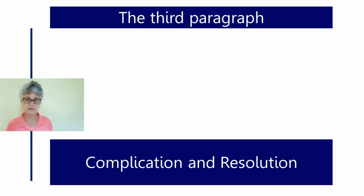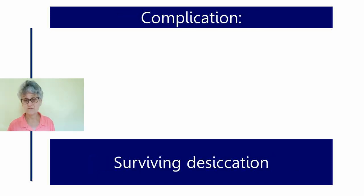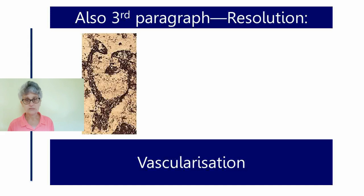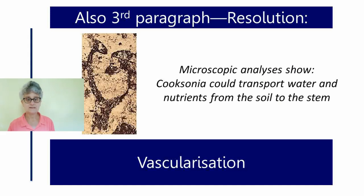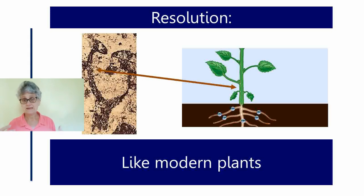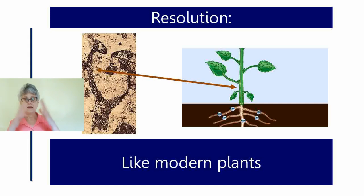The third paragraph gives the reader both the complication and the resolution. The complication is surviving desiccation — surviving drying out. The most challenging threat of living out of the water is the problem of shriveling up. And it also gives the resolution: Taylor and O'Day say that under microscopic analyses of these fossils, there's evidence that these fossils could transport water and nutrients from the soil up into the body of the fossil — a vascular system that persists to this day in modern plants.